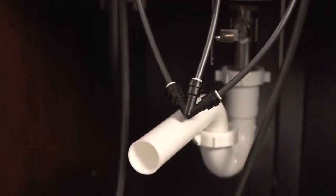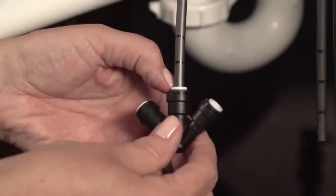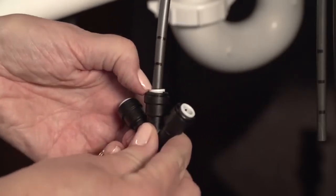If you need to remove the W fitting from the tubes, simply push down on the white ring and pull it off the tube.